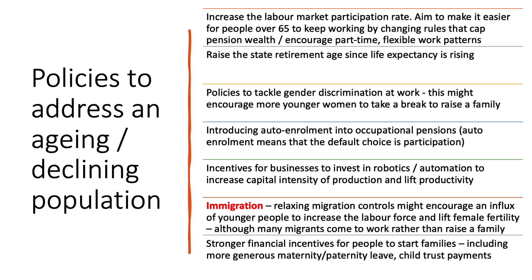Of course, the biggest potential response to a declining and ageing population is to adopt a more relaxed approach to immigration. Relaxing immigration controls and increasing migration quotas might encourage an influx of younger people to increase the labour force and also raise female fertility — although the evidence is that many migrants come to work in a country for a short period rather than stay long-term to raise a family. Other governments are now starting to think more imaginatively about bigger incentives for people to start families, including more generous maternity leave and significant child trust payments. Keep an eye on the countries you're interested in to see which particular policies they're introducing to address the issues of declining and ageing populations.